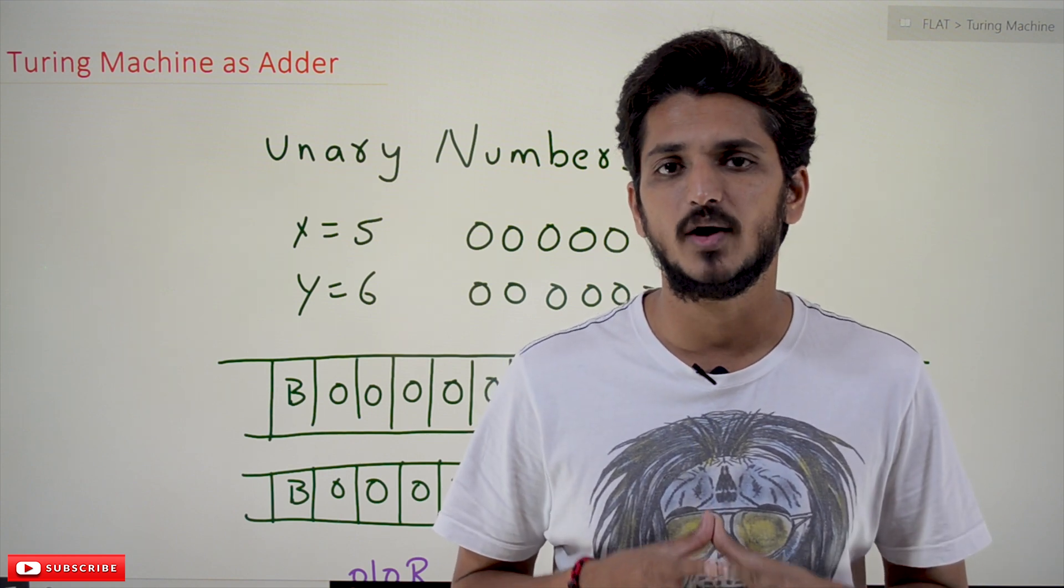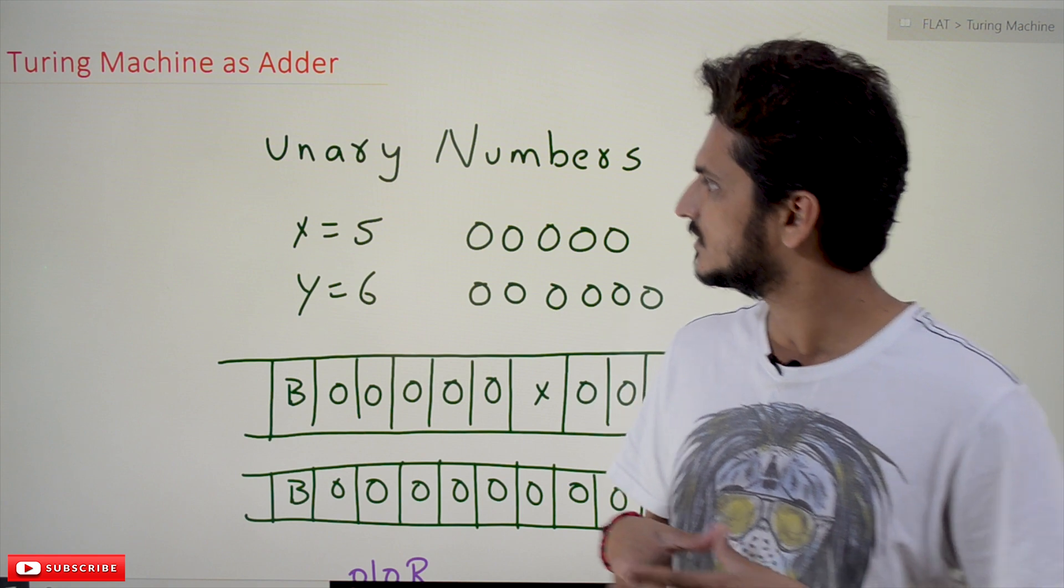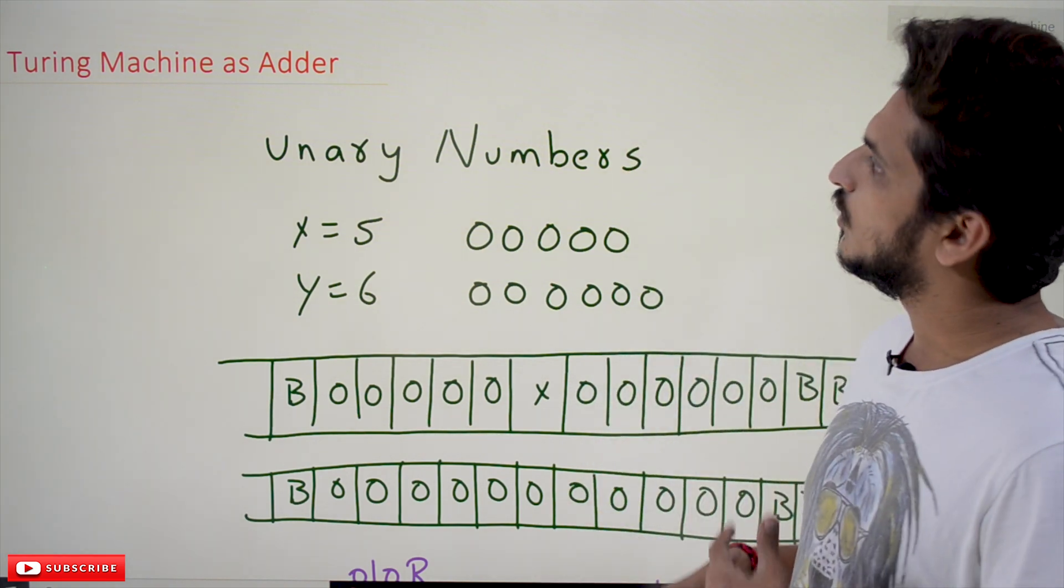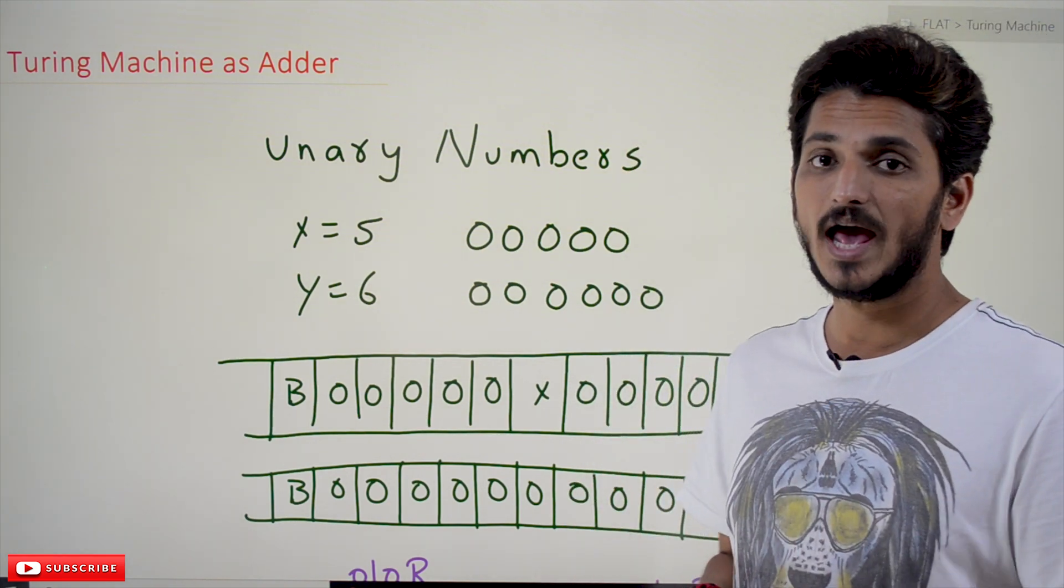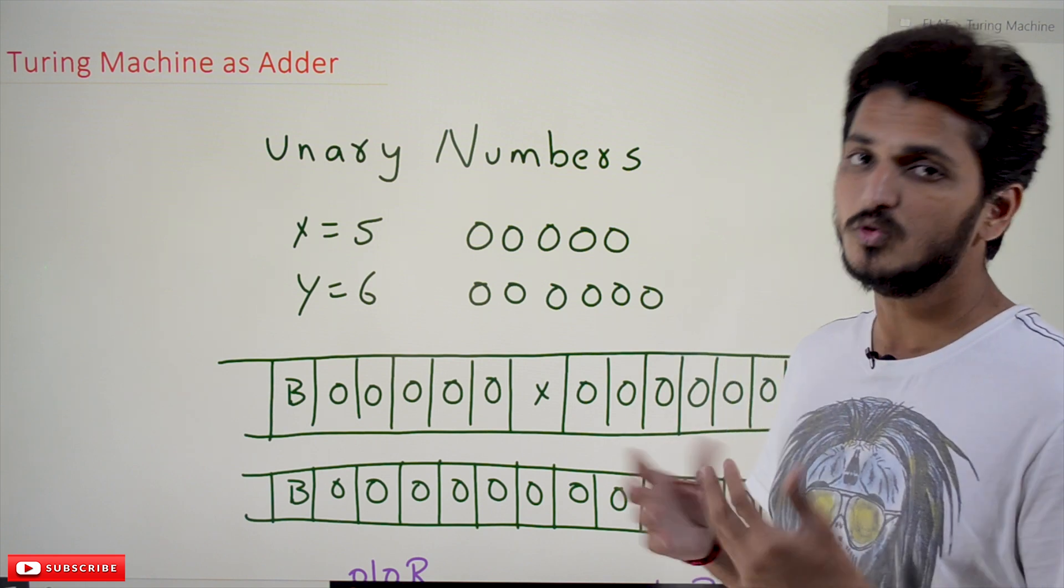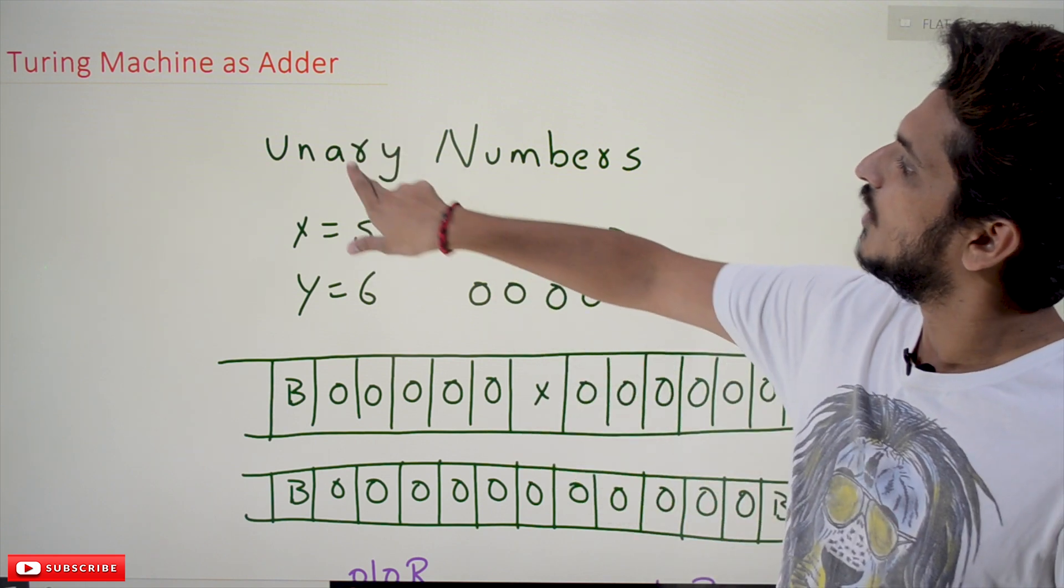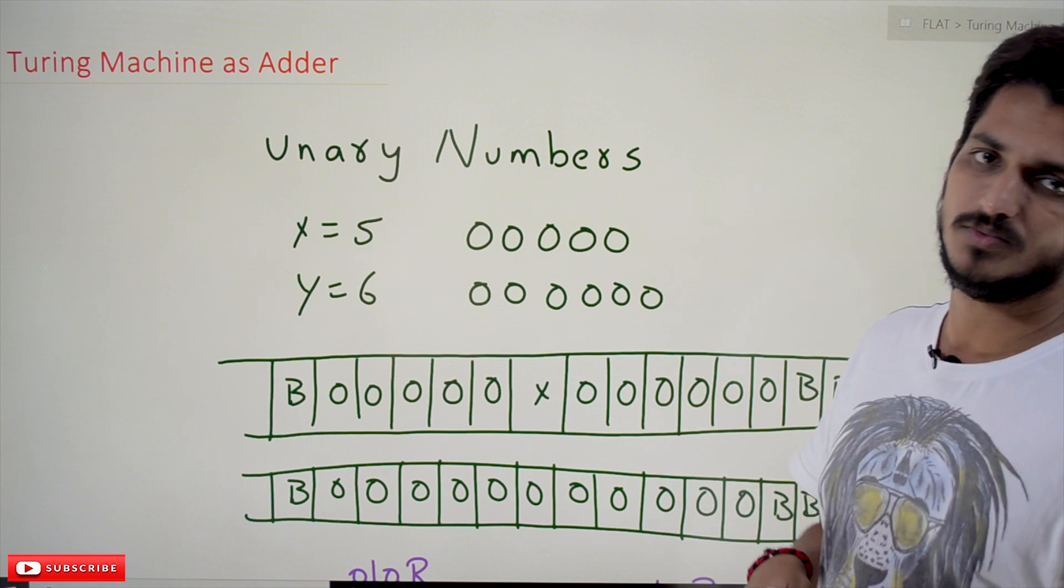Coming to today's class, we can use Turing machine as an adder for additions. Let's say we are using unary number system here. Let's understand what unary number system means.